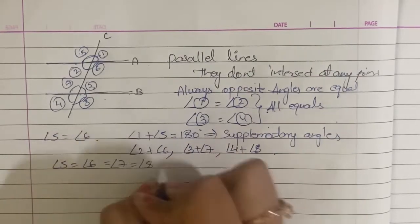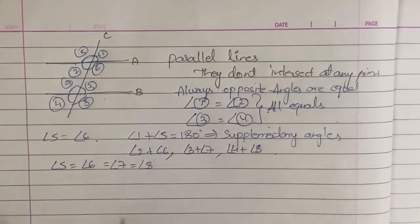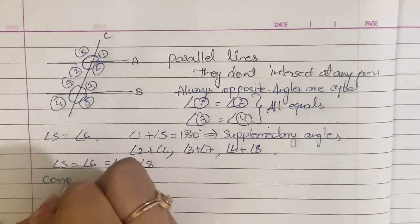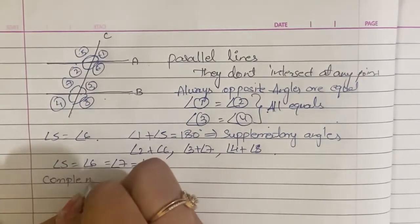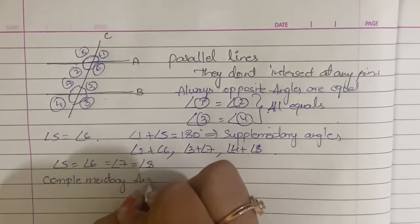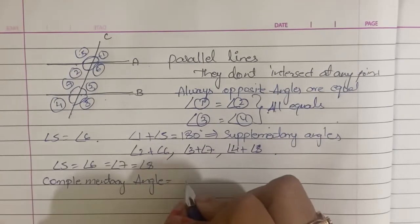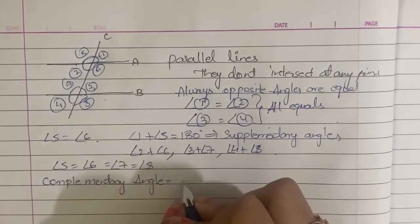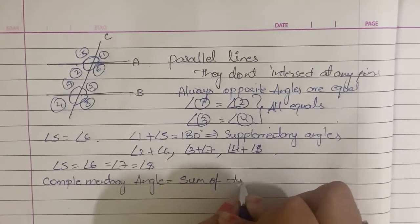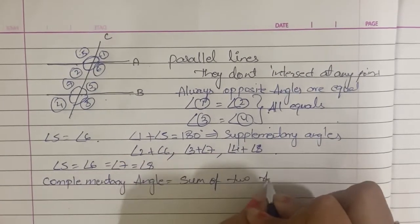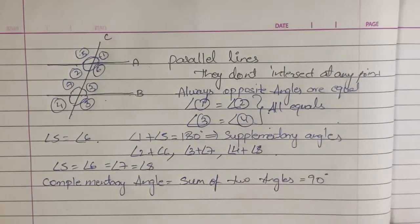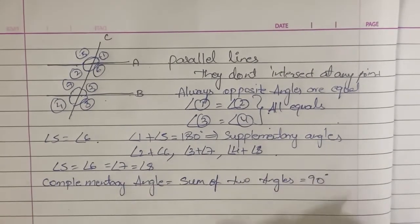Angle 7 is equal to Angle 8. Next, the complementary angle — a complementary angle is when the sum of two angles equals 90 degrees. These are complementary angles.